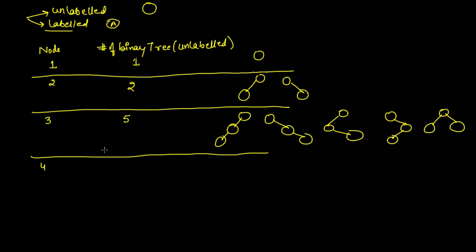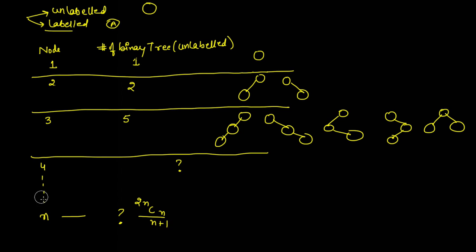If we have four nodes, how many different binary trees are possible? We can extend this question to: if we have n nodes, how many different binary trees are possible when all nodes are unlabeled? You can solve this by induction, but the direct formula is: 2nCn divided by (n+1). This is the number of different binary trees possible for n unlabeled nodes.